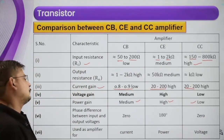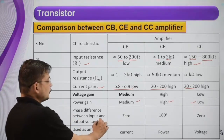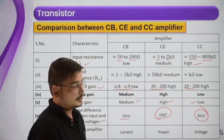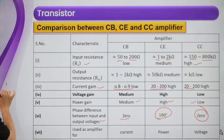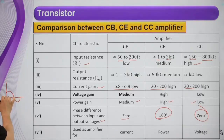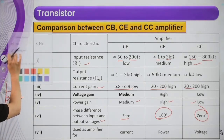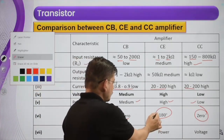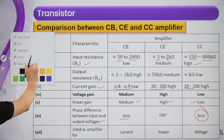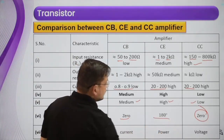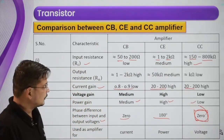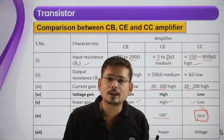For phase difference between input and output voltage: in common base the phase difference is 0 degrees. In common emitter the phase difference is 180 degrees — input and output voltages are out of phase. In common collector the phase difference is 0 degrees. So remember: 180 degrees phase difference is in the case of common emitter, and 0 degrees in common base and common collector.